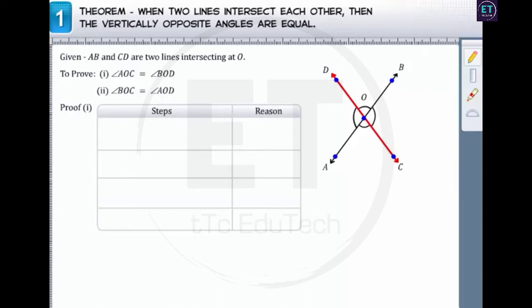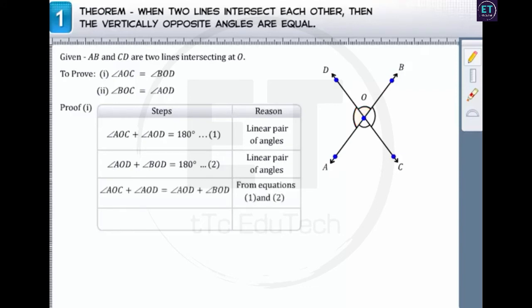Since CD is a line, angles AOC and AOD form a linear pair. And thus their sum is equal to 180 degrees. Similarly, AB is a line. Thus the sum of angles AOD and BOD is equal to 180 degrees. Now, from equation 1 and 2, the sum of angles AOC and AOD is equal to the sum of angles AOD and BOD. On equating, we get angle AOC as equal to angle BOD.